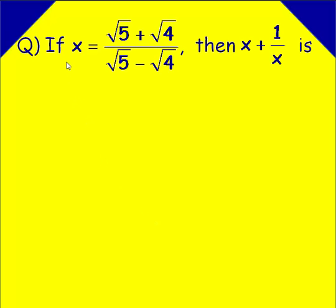In this video we see how to solve the problems in the chapter sets. For example, take a problem: if x equals root 5 plus root 4 divided by root 5 minus root 4, then find x plus 1 by x. Given the value of x, we have to evaluate the sum of the terms x and 1 by x. Now we have a shortcut for this model.